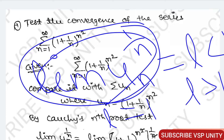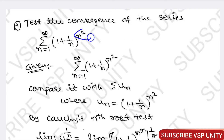Here, why are we using Cauchy's root test? Because in general, if the power is like n or n squared or similar, you can use Cauchy's root test and get directly to the solution.